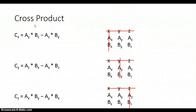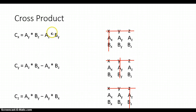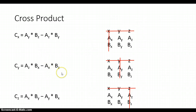Let's look at a different way to find the cross product for vectors in three-dimensional space with x, y, and z components. The x component of the cross product equals the y component of a multiplied by the z component of b, minus the z component of a times the y component of b. The y component equals the z component of a times the x component of b, minus the x component of a times the z component of b. The z component equals the x component of a times the y component of b, minus the y component of a times the x component of b.